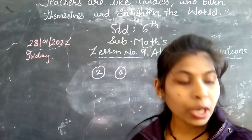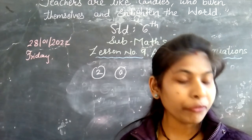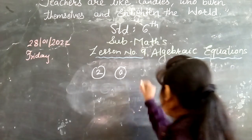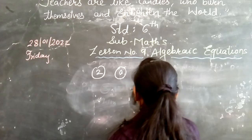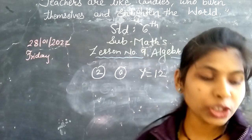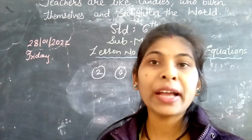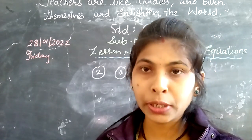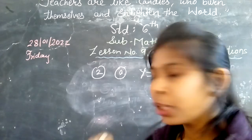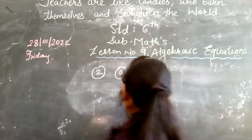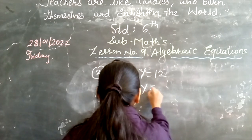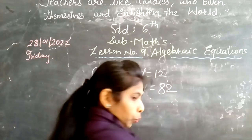हमें यहाँ पे y की value दी हुई है — y is equal to 12. और हमें कुछ equations दी हुई हैं जिसमें y की value put करनी है और answer निकालना है, ठीक है? So first question में है: 7y is equal to 82.